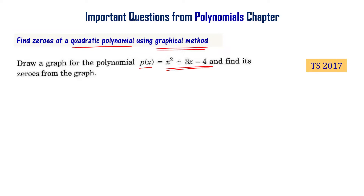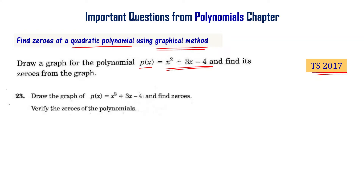This question appeared in the Telangana final exam 2017. Draw the graph of P(x) = x² + 3x - 4 and find the zeros — this also appeared in the AP final exam 2016.